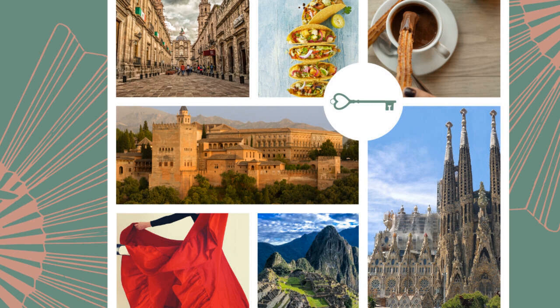Let's take a closer look at them. First, saber. This verb is all about expressing knowledge regarding concrete information, such as facts, trivia, or how to do something like playing the piano, writing out calculus, or wood carving. For example: 'Sé historia' — I know history. 'Yang sabe hablar español, francés y chino' — Yang knows how to speak Spanish, French, and Chinese.